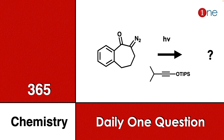Welcome to One Chemistry. This is the 365 Chemistry Series — one daily question for you. Here you have benzene and a fused six-membered ketone ring, with an azide at the side chain. You are reacting it with light and an alkane with OTips. You have to guess what the final product will be.